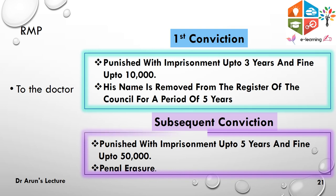If a pre-diagnostic test has been employed without any valid indication, or it has been proved that the doctor communicated the sex of the fetus, or there has been negligence in any part prescribed by law, it will be considered an offense. On a subsequent conviction where the same or other offenses are repeated, the person will be punished with imprisonment up to 5 years and a fine up to 50,000 rupees, and his name will be permanently removed from the register, barring him from further practice.